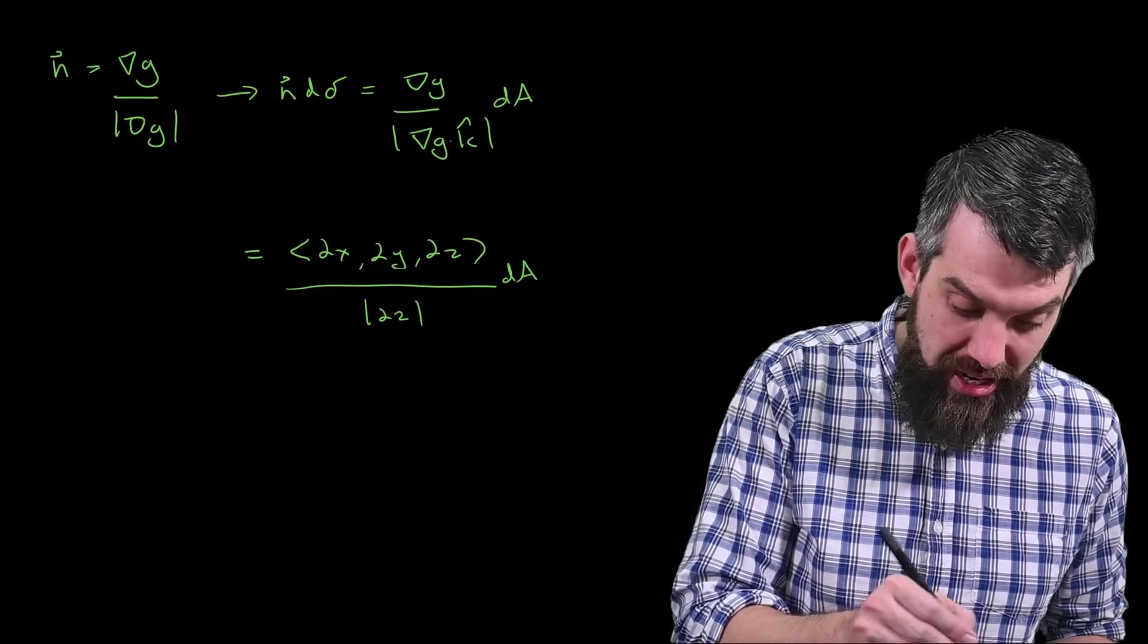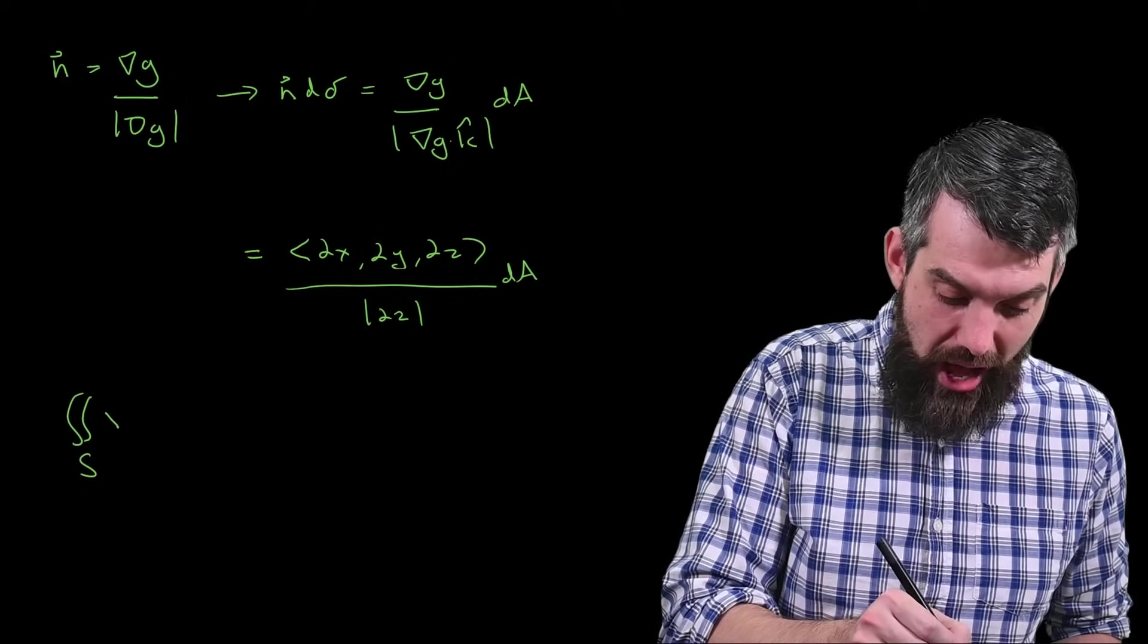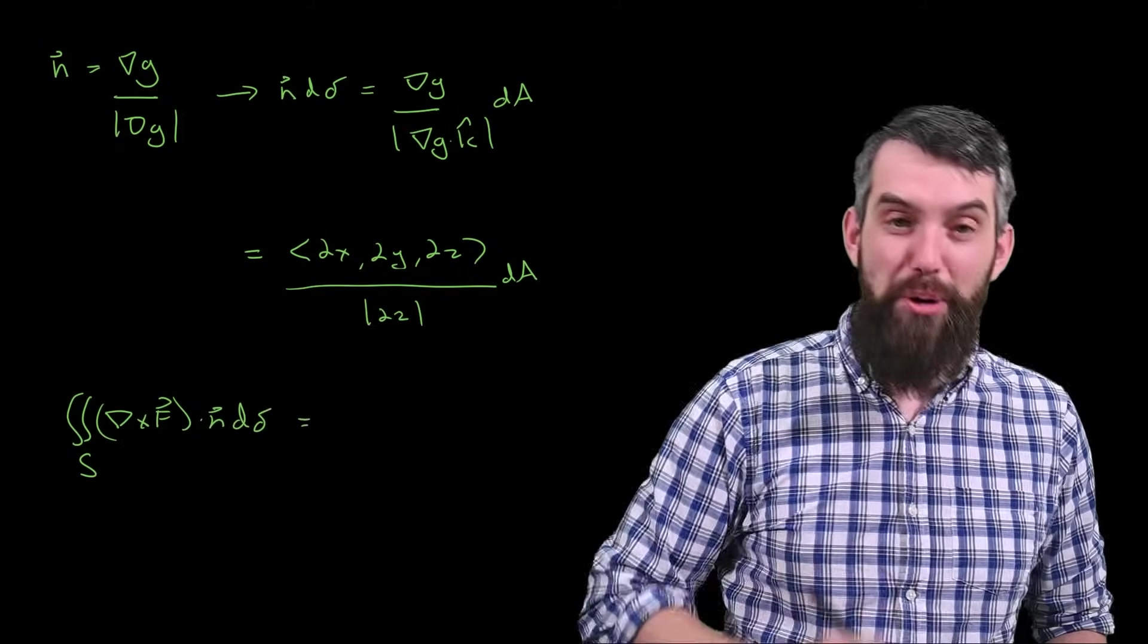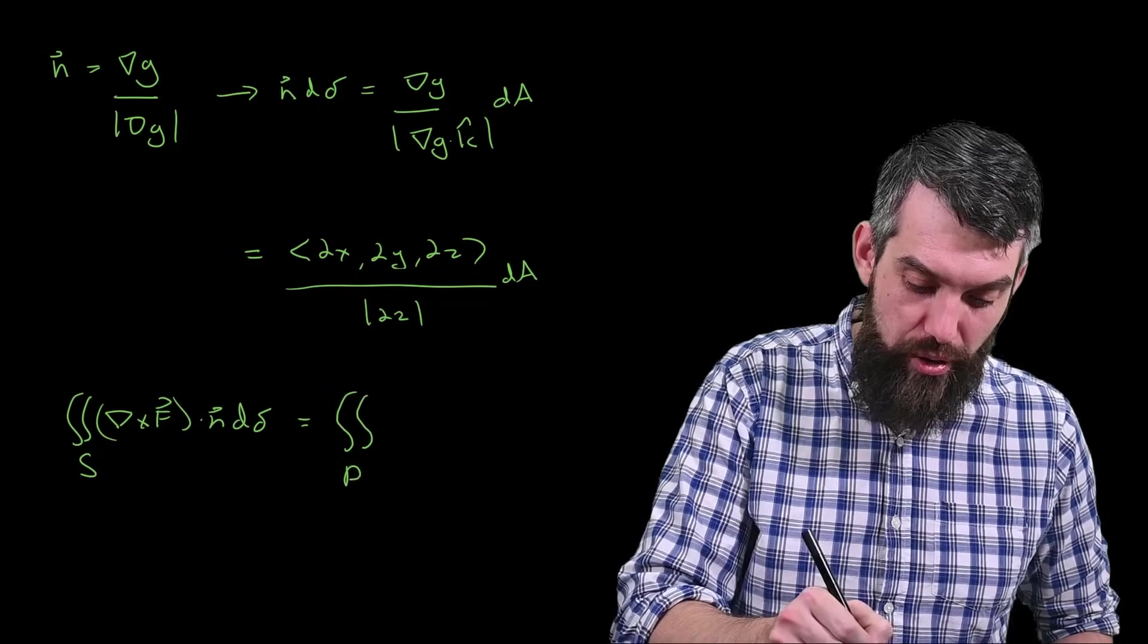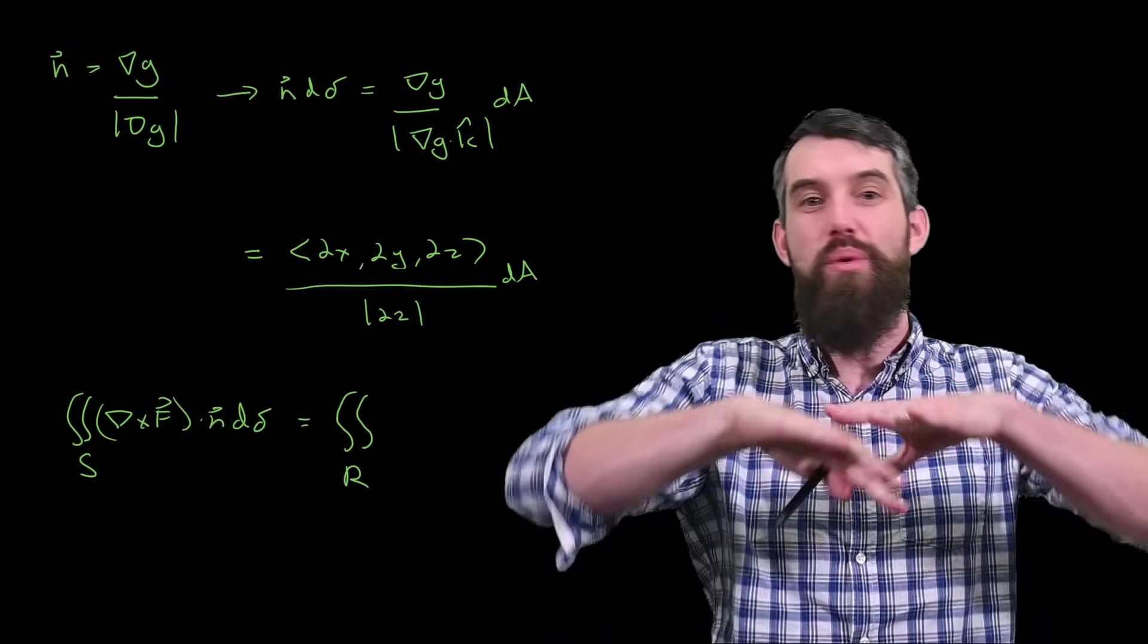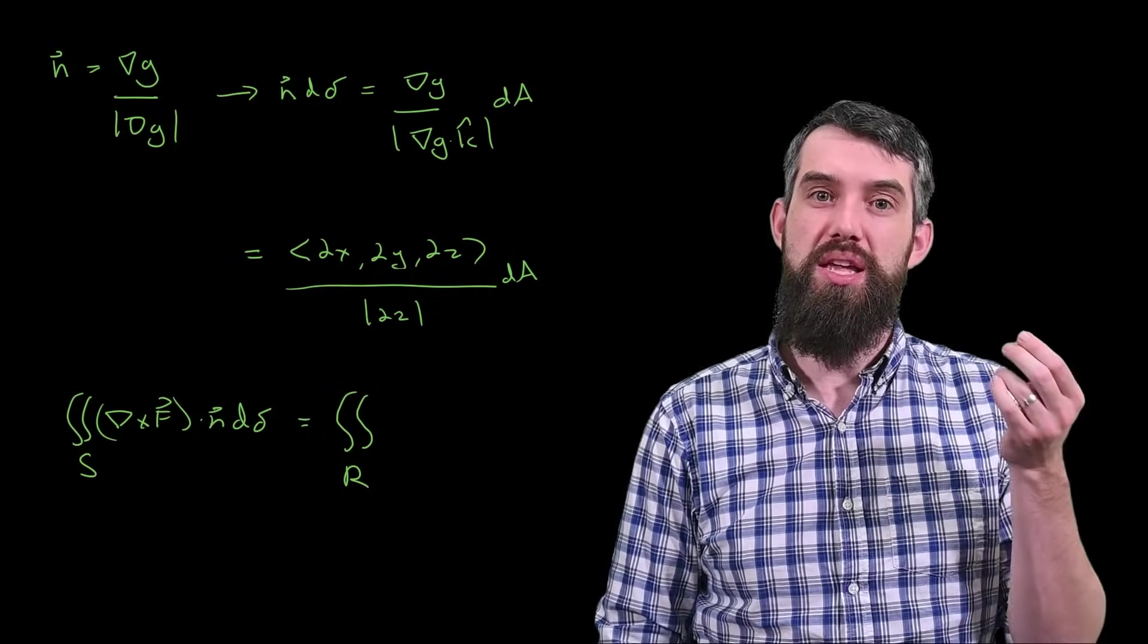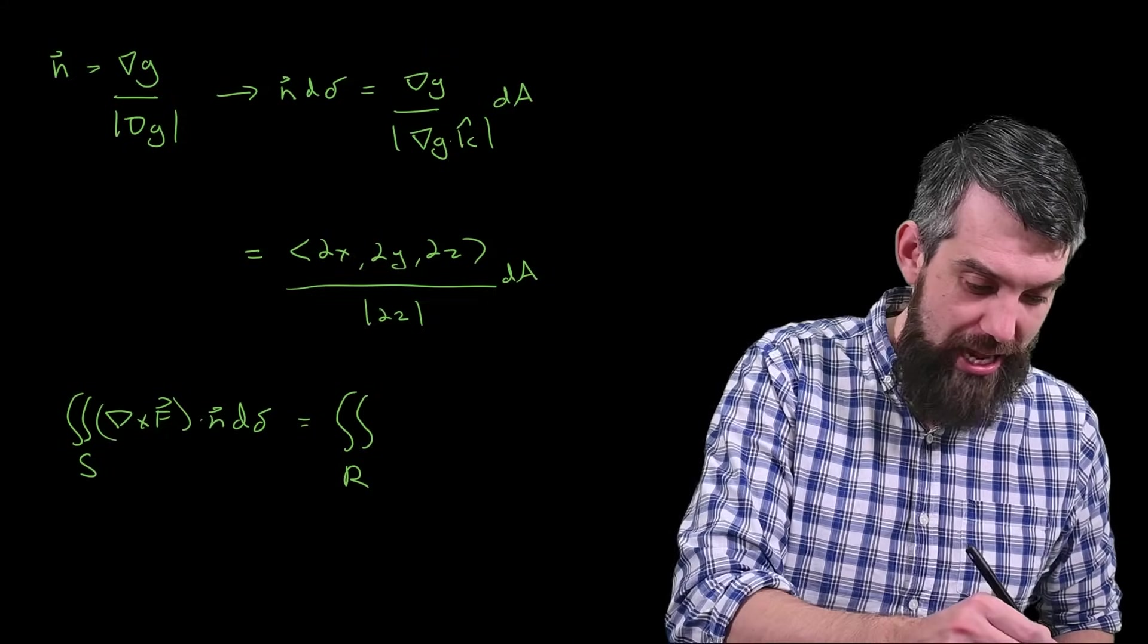Alright, so now I think I'm finally in a position to come forward and write out my surface integral of the curl of f dotted with n d-sigma. And multiple things are going to be happening in this formula at once. So the first thing is, it's going to be a double integral over the region now. So this is the region in the xy plane, when I think of my surface being above it. That is, I'm shifting from a d-sigma to a d-a here.